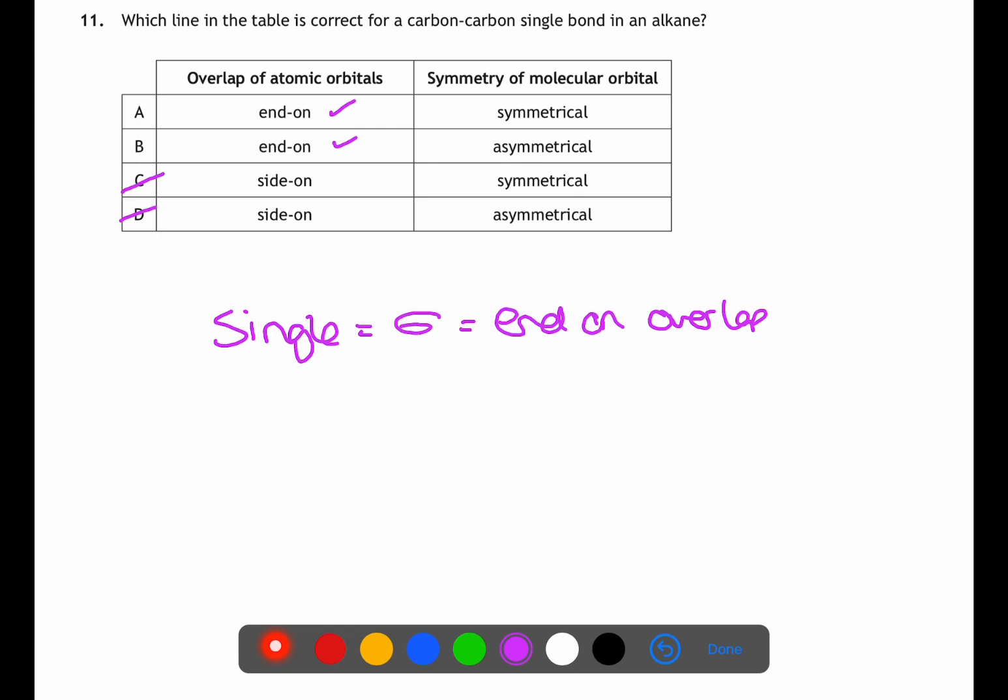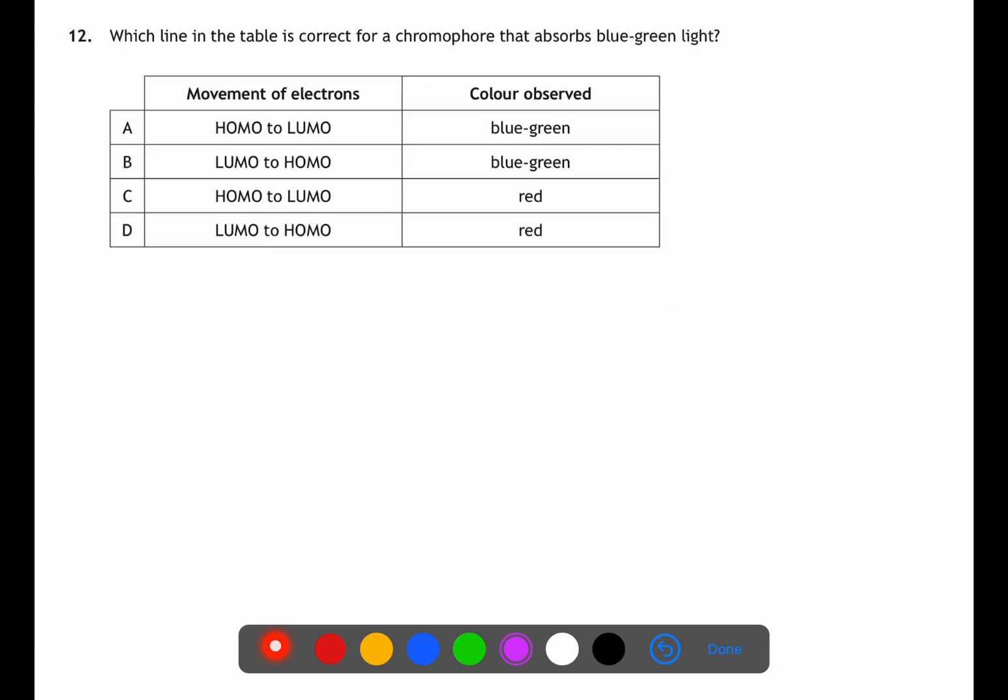Question 12 is looking at color in organic molecules. The movement of electrons is always from the HOMO, the highest occupied molecular orbital, to the LUMO, the lowest unoccupied molecular orbital. Therefore we can eliminate B and D. The color observed will always be the complementary to that which is absorbed. If we absorb blue green light then we'll see red light.